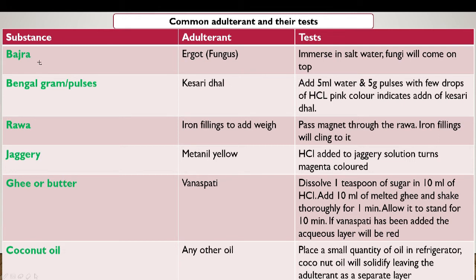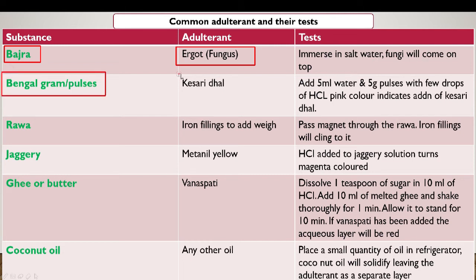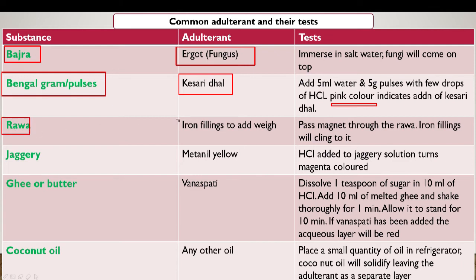There are several tests to identify adulteration, both at the home-scale level and at the laboratory level. The adulterant present in bajra is ergot, which is a poisonous fungus. To test it, immerse in salt water — the fungus will float to the top. In bengal gram and pulses, kaseri dal is the adulterant, which causes lathyrism and cancer. To test it, add 5 ml water and 5 grams of pulses with a few drops of HCl — a pink color indicates the presence of kaseri dal.